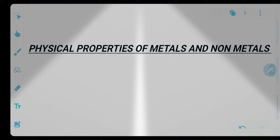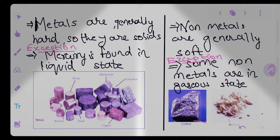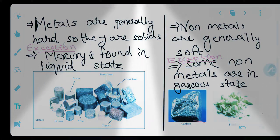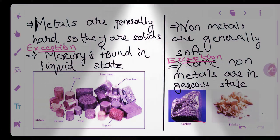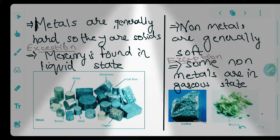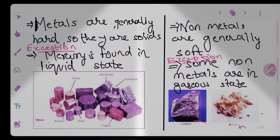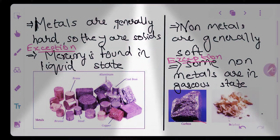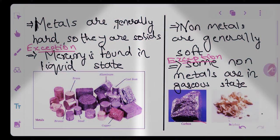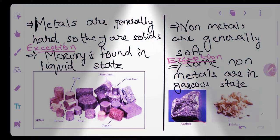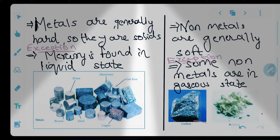So let's begin. Metals, as you all know, are generally hard, so they are regarded as solids. They are very tough, so metals are generally found in solid state. An exceptional case is mercury (chemical formula Hg), which is in liquid state and is generally used in thermometers for temperature measurement. Common metals include brass, bronze, steel, copper, iron, and aluminium — these are the most extracted metals from the earth.